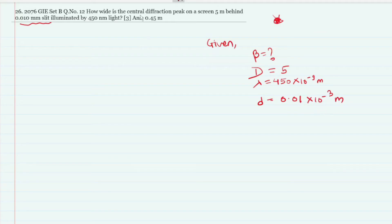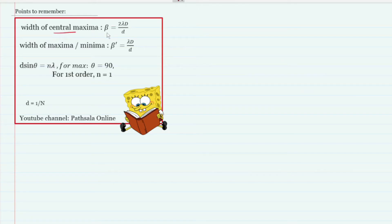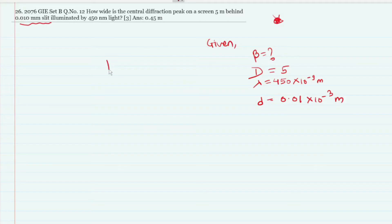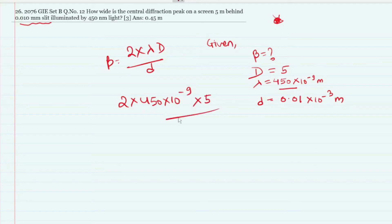We have to write the formula for the width of the central diffraction maximum, which is equal to 2λD divided by d. So beta = 2 × λ × D / d = 2 × 450 × 10⁻⁹ × 5 divided by 0.01 × 10⁻³, which gives 0.45 meters.